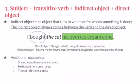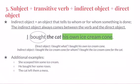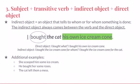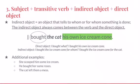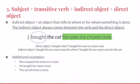In this case, the indirect object — which is 'the cat' — tells us who the subject bought the ice cream cone for. Practice identifying the complete subject, transitive verb, indirect object, and direct object in the additional examples at the bottom of the slide.